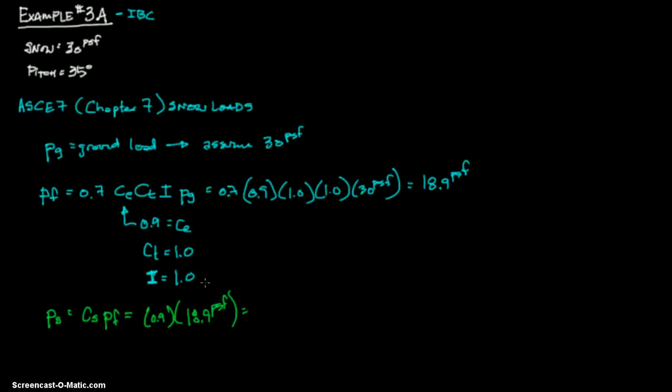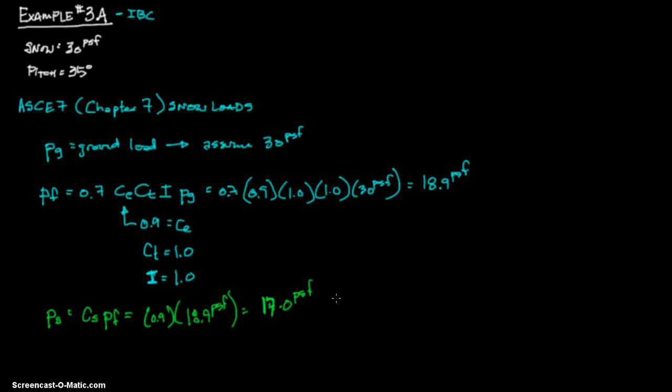Let me get my calculator again. We're saying 18.9 times 0.9, and you get 17.01. I'll just say 17.0 PSF. As you can see, we started with 30 PSF, but given our inclination, we were able to reduce that to 17.0 PSF, which is about half, so it's over half reduction. And that is the general snow load.